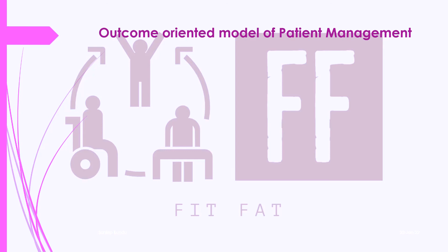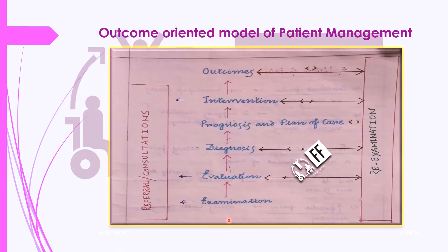Now let's see a flowchart of what we have learned. First is examination — if you think this is not your area of expertise, you refer the patient to an expert. Then evaluation — again, if referral is needed you do that. Then diagnosis, prognosis, and plan of care, followed by intervention — where again you may refer to a specialist if needed — and then the outcomes. Throughout all stages from evaluation to outcome, you need to perform a re-examination after a certain period of time.